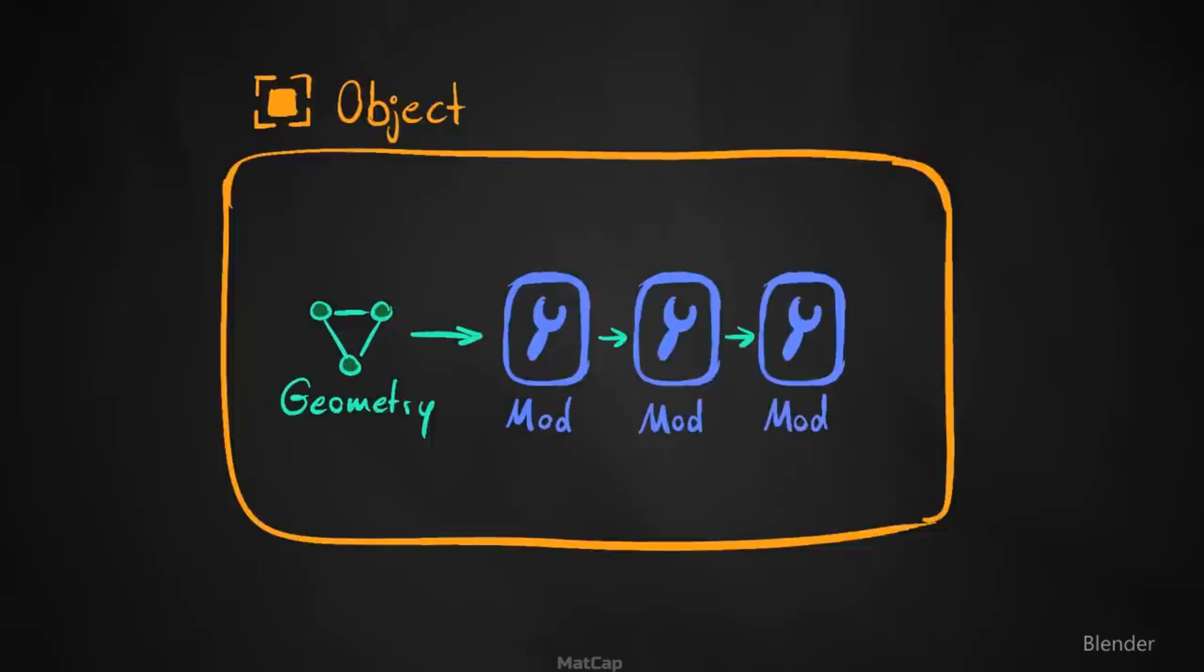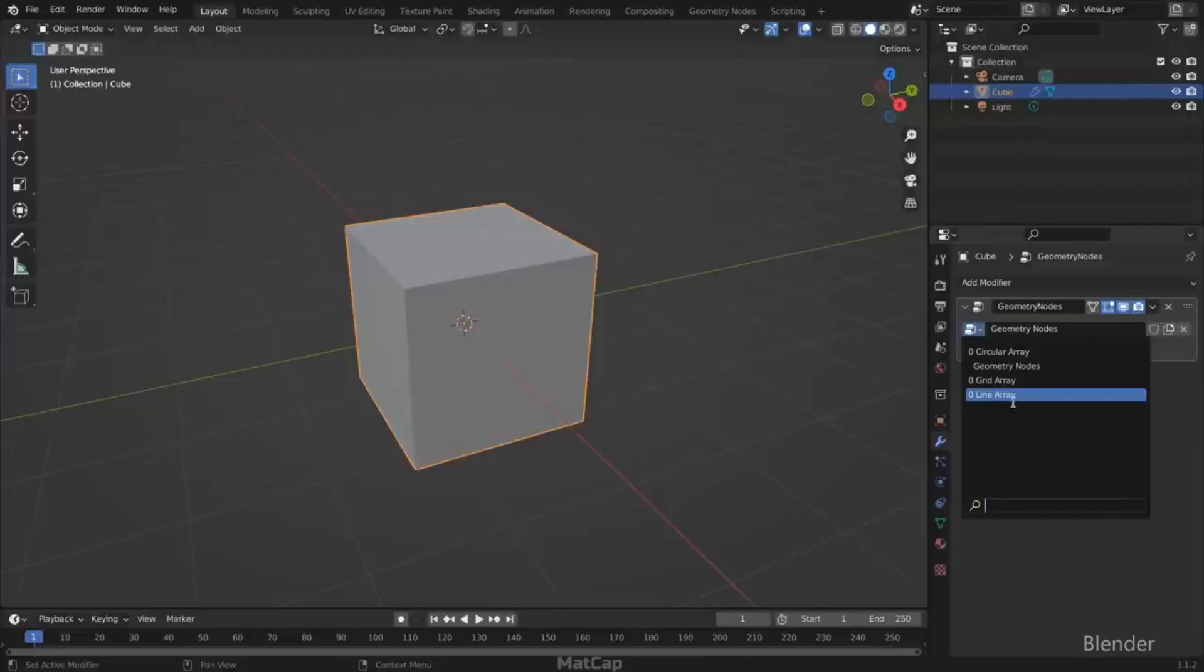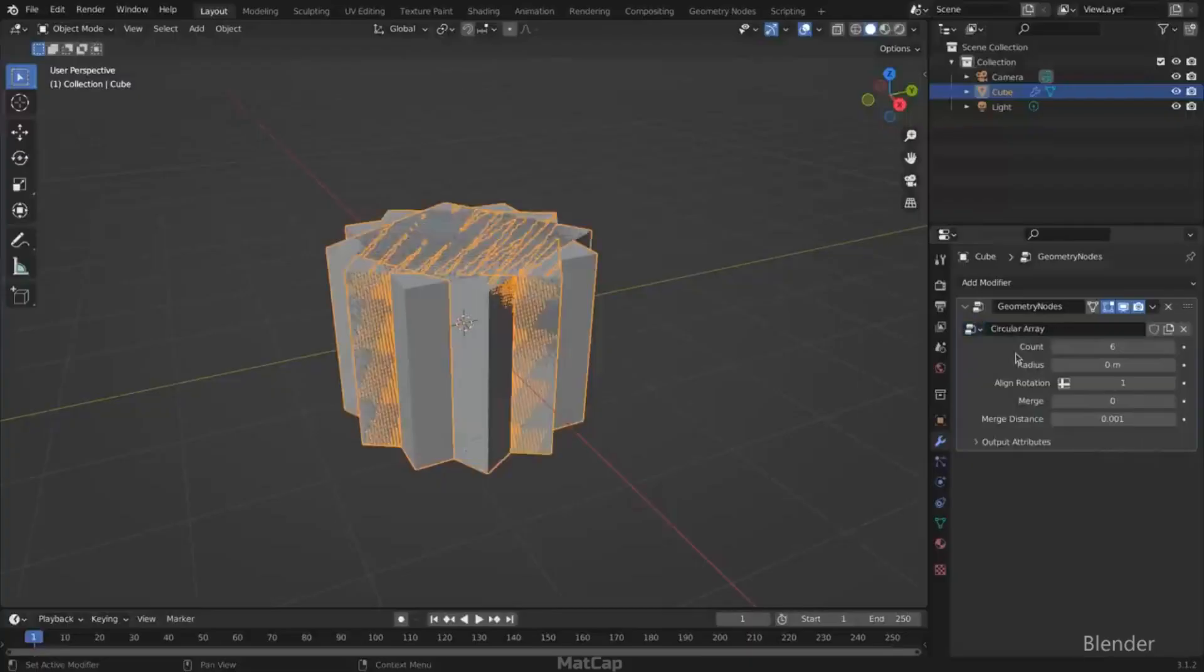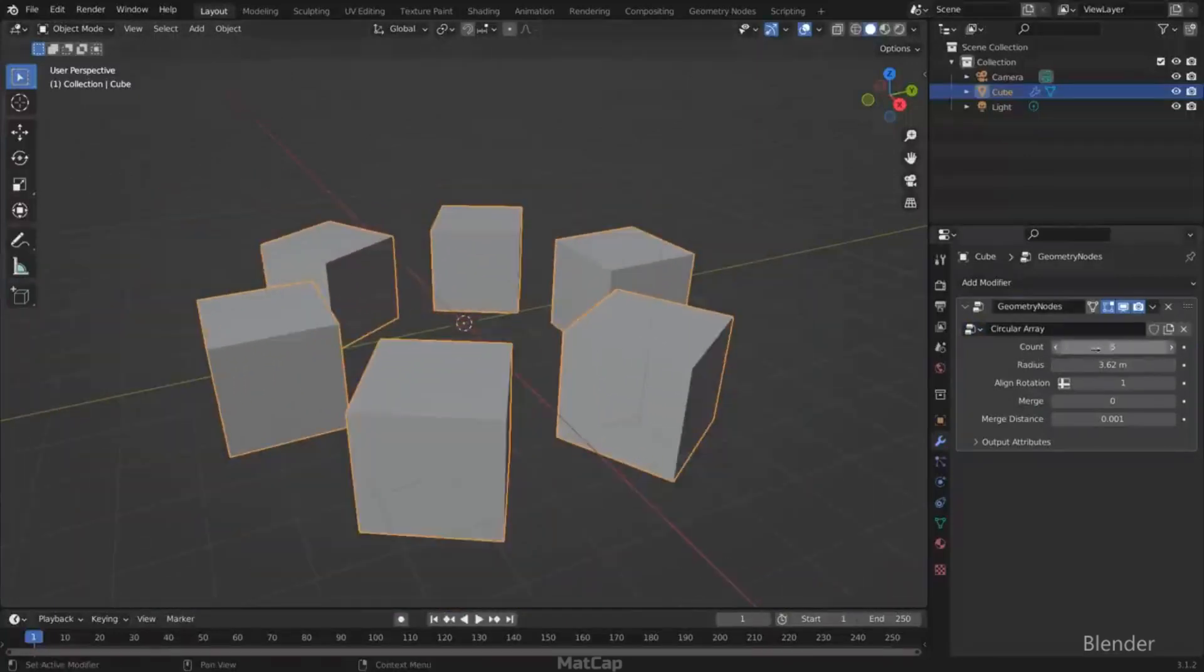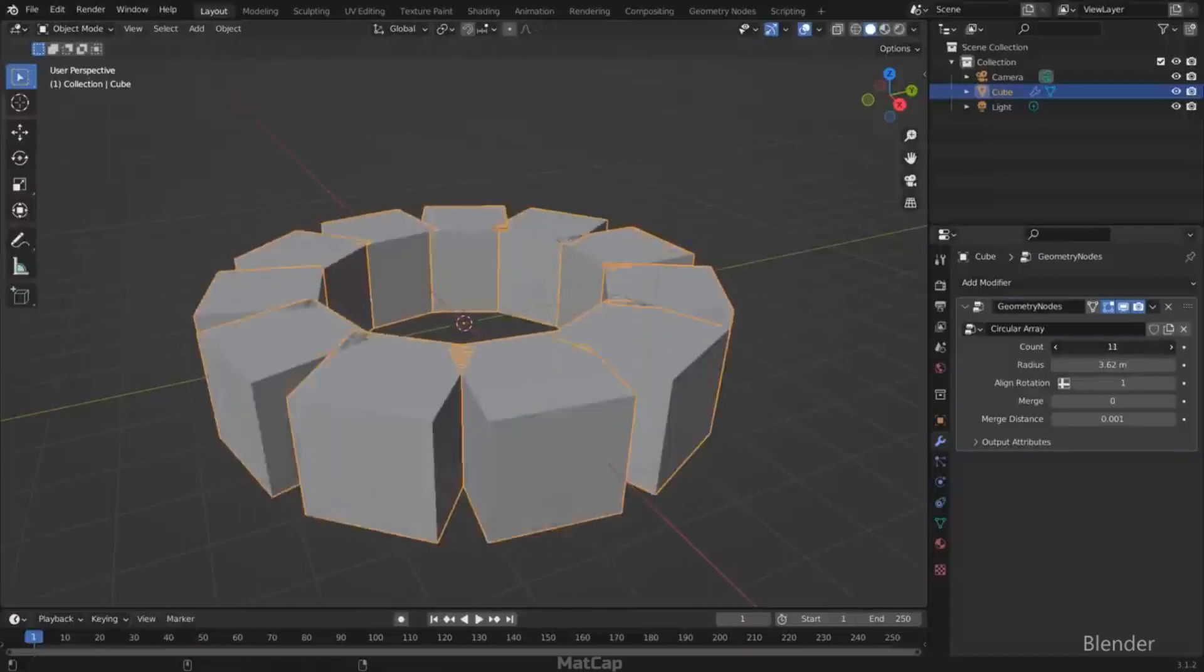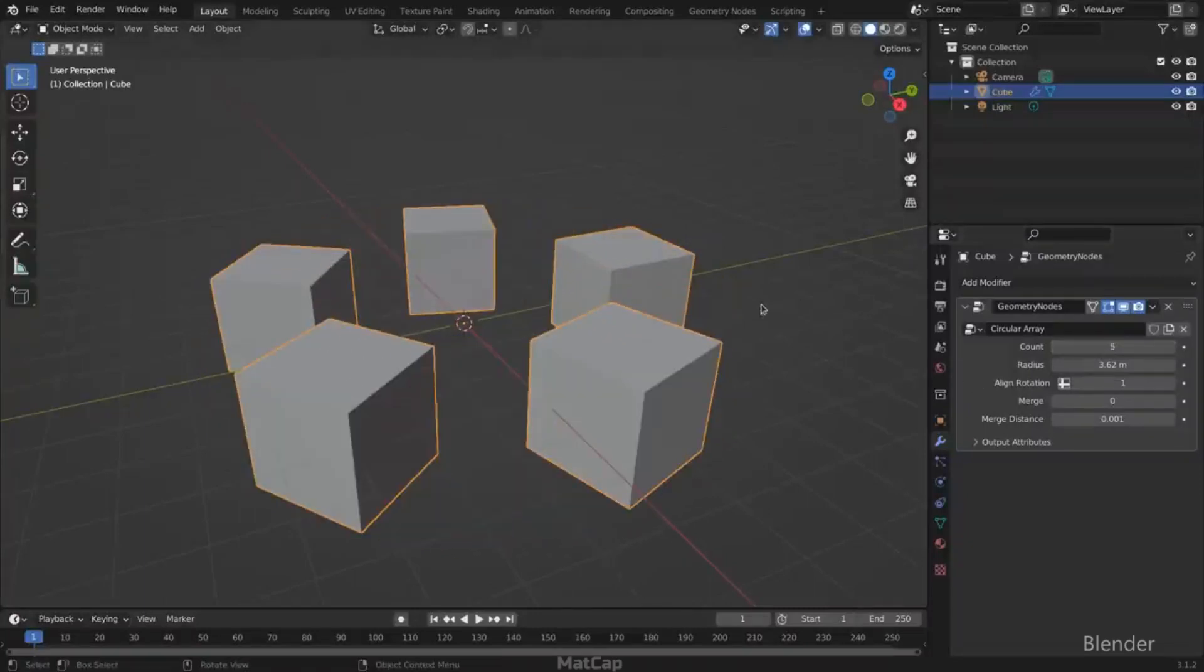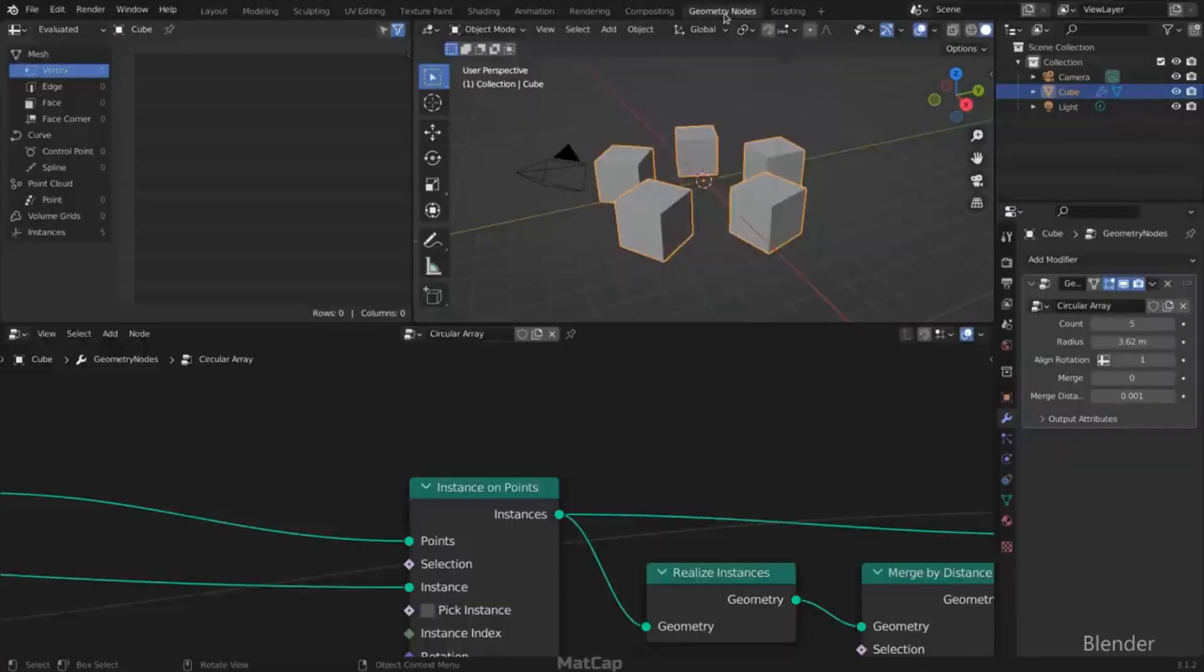Like other modifiers, it takes geometry from previous modifiers or the base geometry and makes changes on top of other modifiers or base geometry. Once you have chosen which node tree you want to use, you can access customizable parameters that determine the modifier settings just like in classic modifiers. However, to have full control over the modifier, you need to switch to the Geometry Nodes editor.